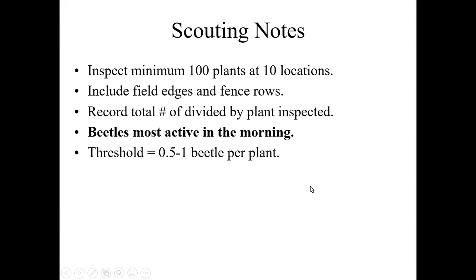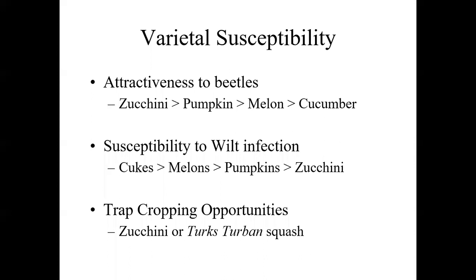Our threshold is half to one beetle per plant, and that's based on the risk of bacterial wilt transmission, not actual damage to the plant. Where plants are highly susceptible to bacterial wilt, use the lower end of that threshold. The attractiveness to beetles tends to be the opposite of susceptibility to wilt infection. Zucchini is one of the most attractive to beetles, then pumpkins, then melons, with cucumbers being their lower preferred food source — they'll go to it if there's nothing else, but given a choice, they'll choose zucchini.